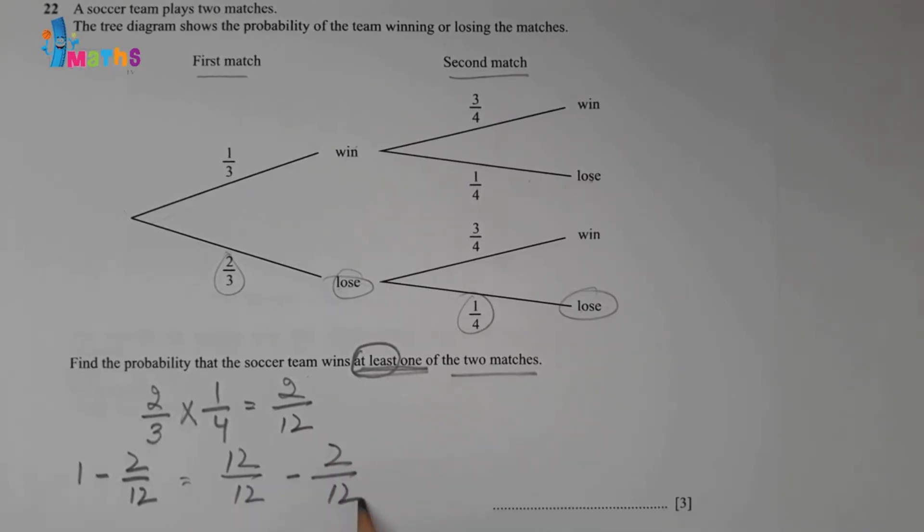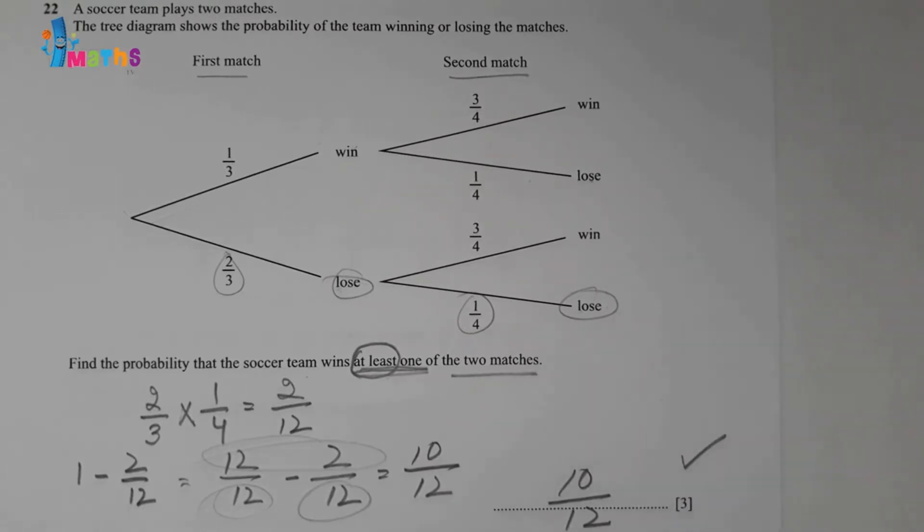12 over 12 minus 2 over 12. Now denominators are equal, now we can subtract the numerators. 12 minus 2 will be 10, so 10 over 12. This will be our answer: 10 over 12. This will be the probability for at least 1 of the 2 matches.